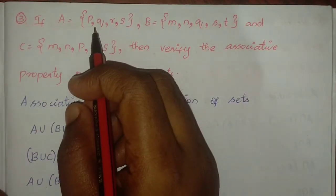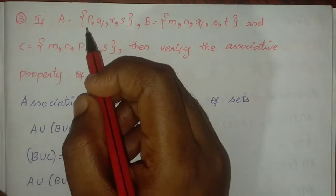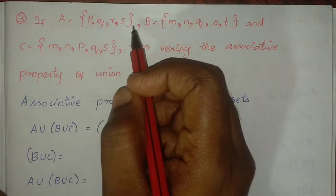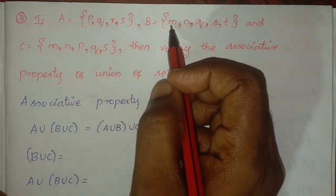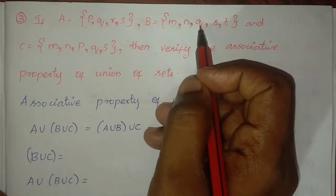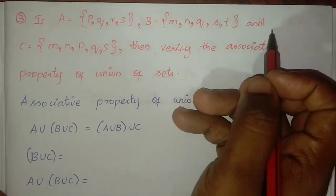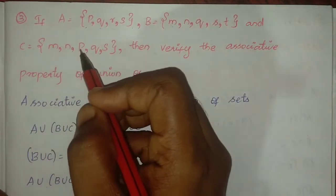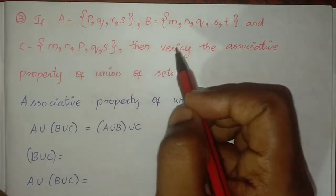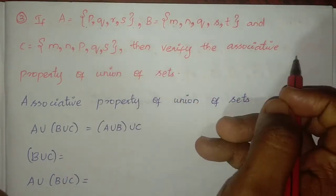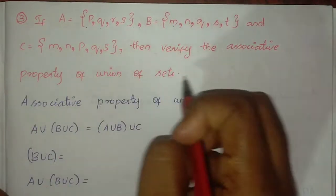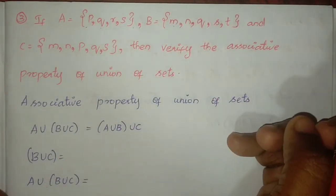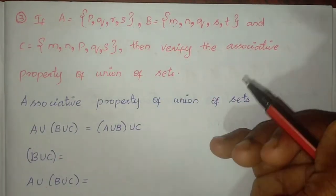If A equals the set {P, Q, R, S} and B equals the set {M, Q, S, T} and C equals the set {M, P, Q, S}, then verify the associative property of union of sets.